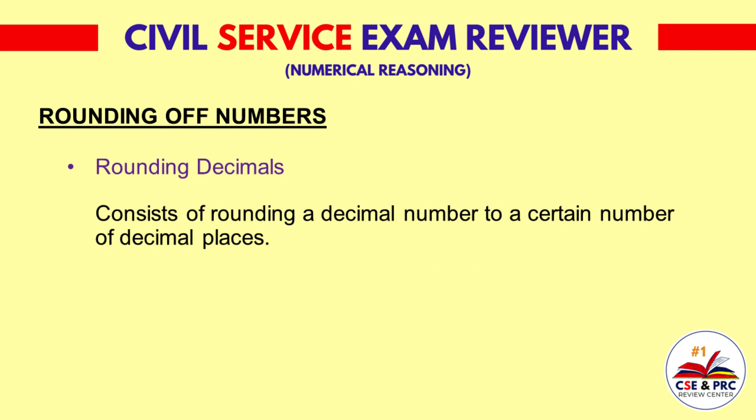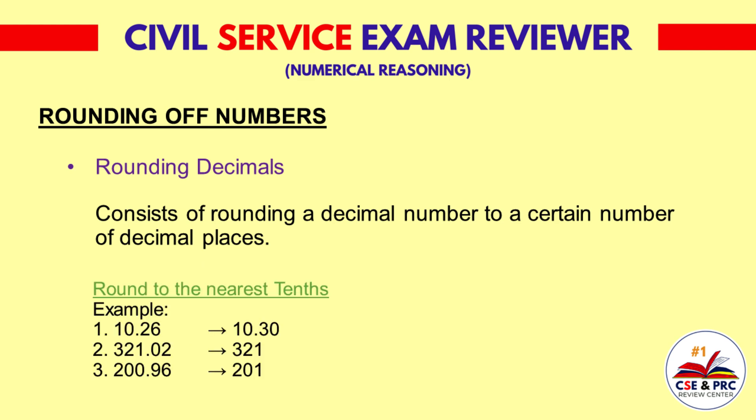Rounding decimals consists of rounding a decimal number to a certain number of decimal places. Round to the nearest tenths. Example 1: 10.26 — the result will be 10.3. Example 2: 321.002 — the result will be 321.0. Example 3: 200.04 — the result will be 200.0.